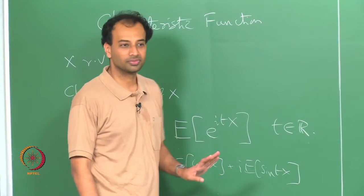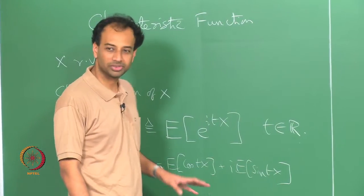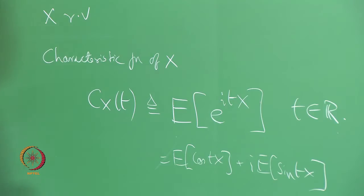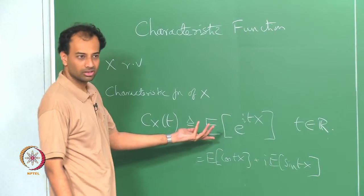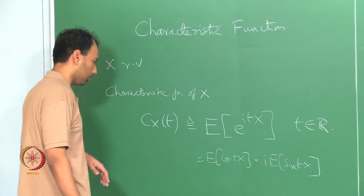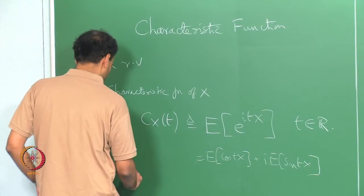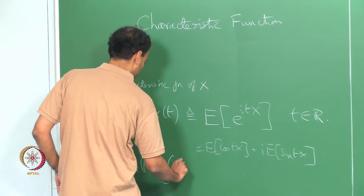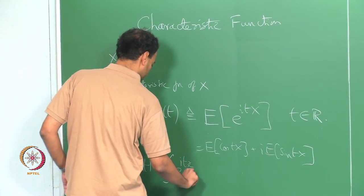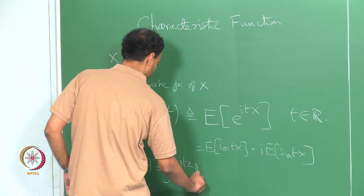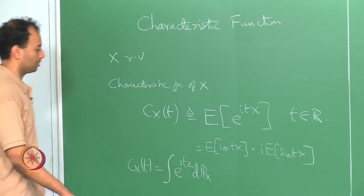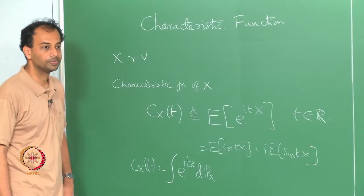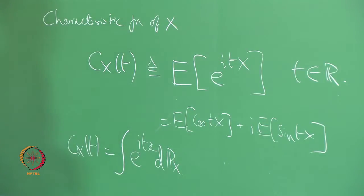Now, this you know what it means because these are all real valued random variables. That is the definition of a characteristic function — it is defined for any random variable. So for any random variable with probability law p_x, the characteristic function c_x of t is nothing but the integral of e to the power i t x d p_x. Given your probability law you can compute the characteristic function.